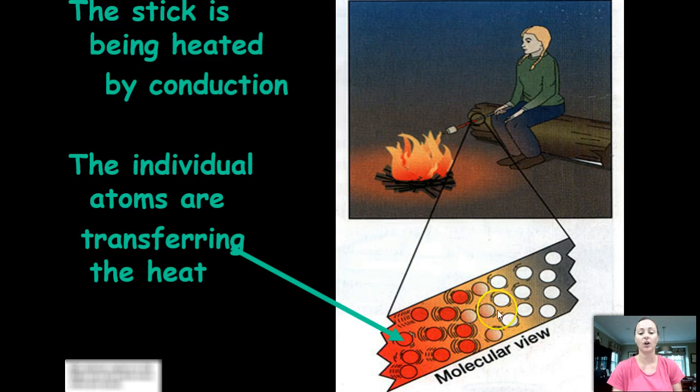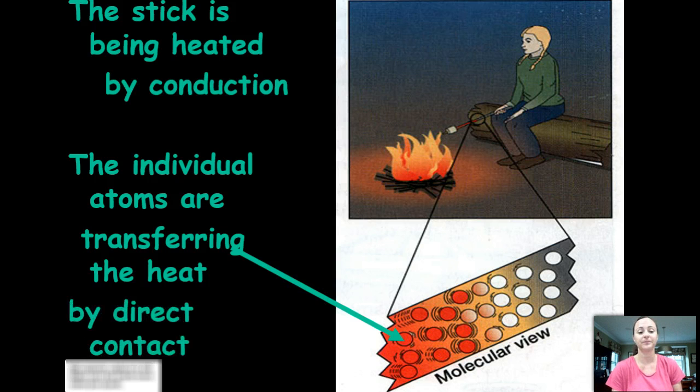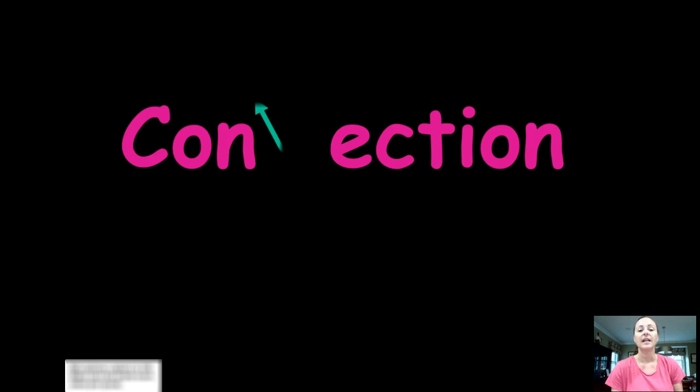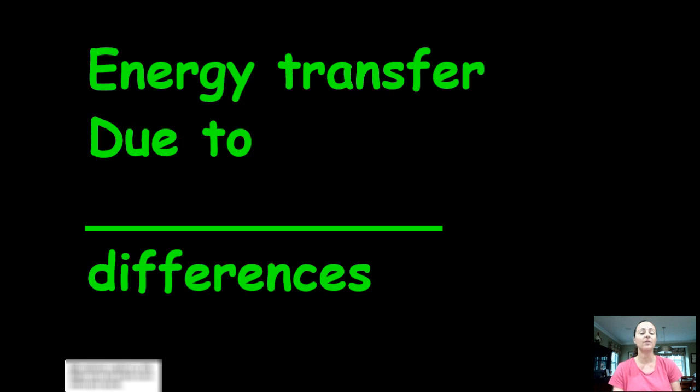So eventually the molecules will continue to heat up, and if that girl is still touching it, it may actually hurt. The last form of energy transfer is called convection, and you notice those arrows going up for a reason.